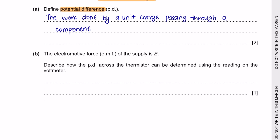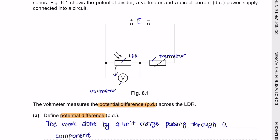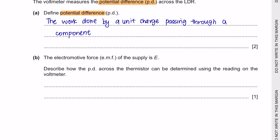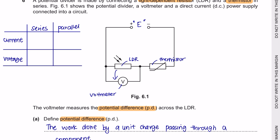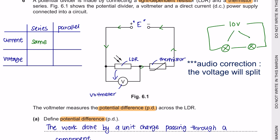Question B: The electromotive force EMF of the supply is E — they're just telling us that the value of the EMF here is E, which is an unknown value. Describe how the potential difference across the thermistor can be determined using the reading on the voltmeter. For a series circuit, the current that flows across the circuit is always going to be the same, whereas for voltage it will split. For instance, if the power supply was 10 volts and you've got two components of the same resistance, the voltage will split equally — 5 volts for each of them.